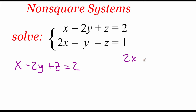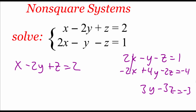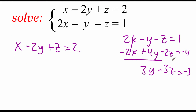We are going to have to do a little bit of work with our second equation. We need to get rid of those two x's. So I'm going to take the top equation times negative 2, giving us negative 2x plus 4y minus 2z equals negative 4. Adding those up, those x's cancel out. We get 3y minus 3z equals negative 3. And then we need a 1 on our y, so I'm going to divide everything by 3.